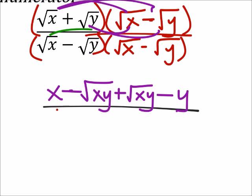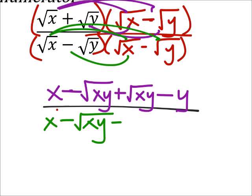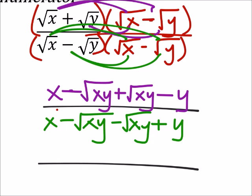In the denominator, I've got the square root of x times the square root of x, which is x. And I've got minus the square root of x times y. Then I've got minus the square root of x times y again. Then I've got minus a negative, so it's going to be a plus. The square root of y times the square root of y is y.